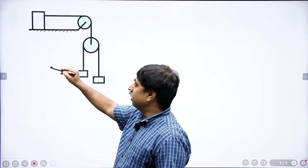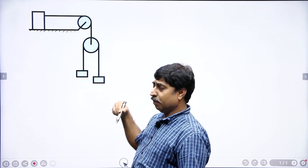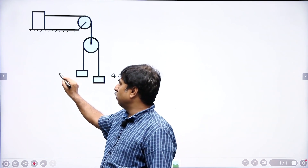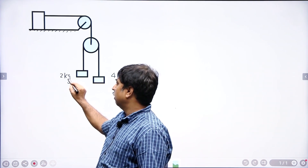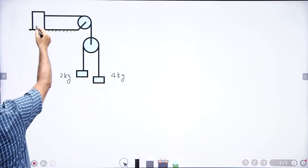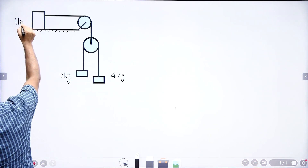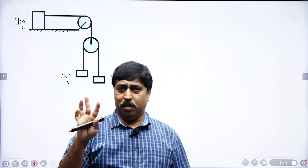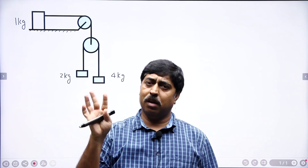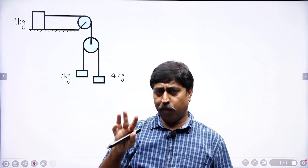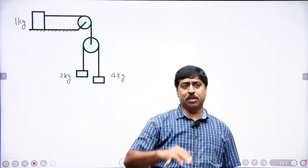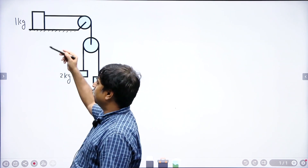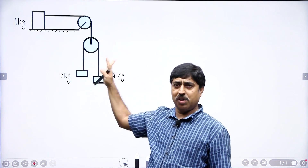Let us say that this table is smooth. This block has a mass of 4 kg, this block has a mass of 2 kg, and let us assume that this block has a mass of 1 kg. All pulleys are ideal — they are massless. Strings are also ideal — they are massless as well as inextensible. The question asks you to find the acceleration of this block, or this block, or this block.